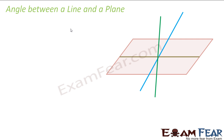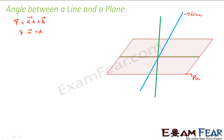Let us take my last topic where we have to find the angle between a line and a plane. If I have a line r = a + λv and a plane r·n = d, then this line direction is the v vector — lambda v vector — and this plane has normal vector n.